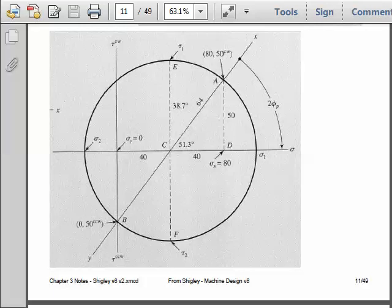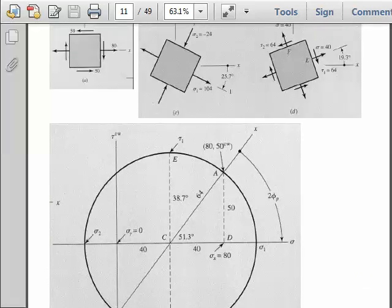To draw these on stress elements, we'll rotate clockwise 51.3 degrees divided by 2 to get to the principal stress face, and we'll rotate counterclockwise 38.7 divided by 2 to get to the maximum shear stress face. And our principal stress was the center 40 plus the 64, so that would be 104. And the other principal stress would be the 40 minus 64, which would be a minus 24.